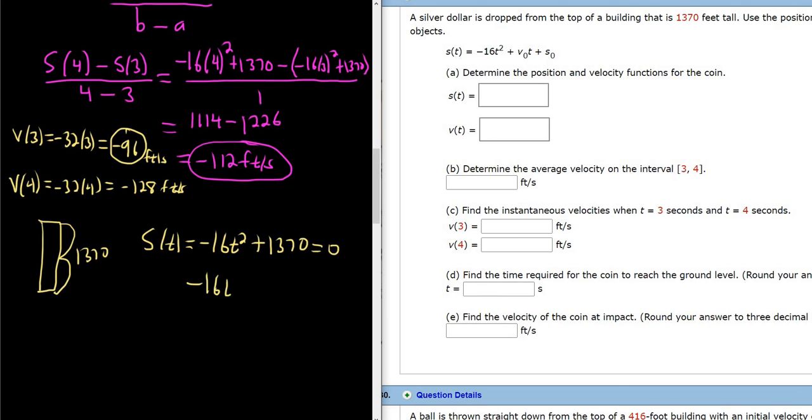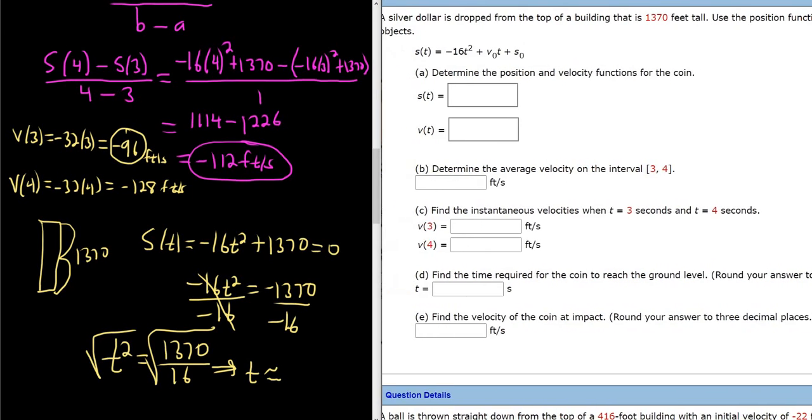So in other words, the time it takes for the position function to be equal to zero. So we have negative 16t squared. Subtract the 1370, and that gives us this. Then divide by negative 16. That gives us t squared equals 1370 over 16. Let me use my calculator just to see what I get. I got a fraction. I'll leave it as 1370 over 16. When you take the square root, you do get a plus or minus. However, you only want the plus because it's time. And it wants, let's see how many decimals it wants. It's pretty picky. Three decimal places.